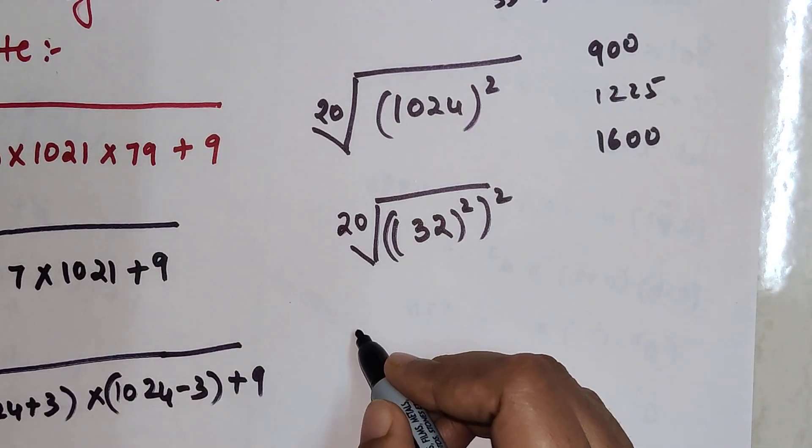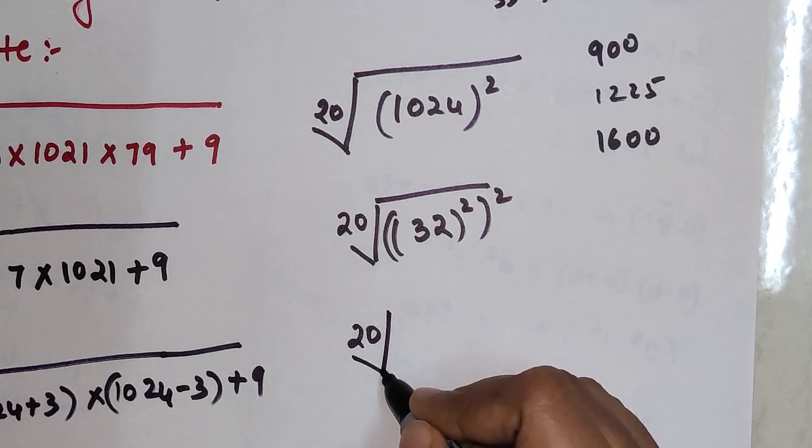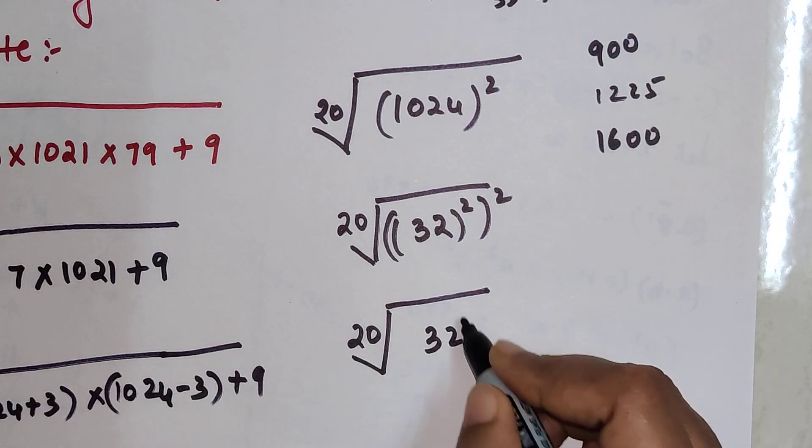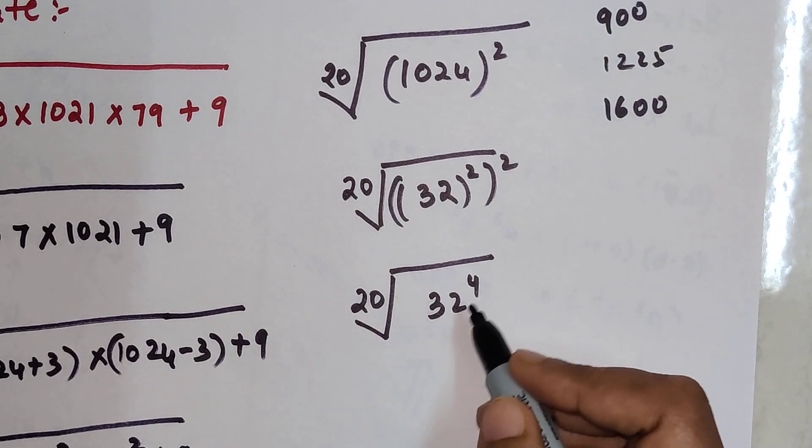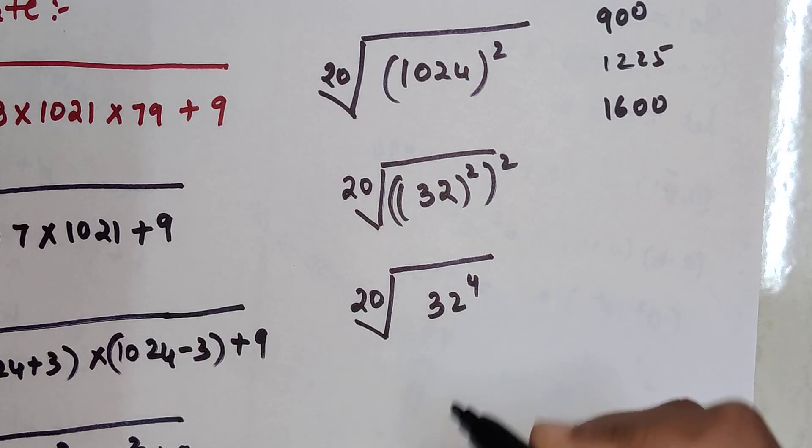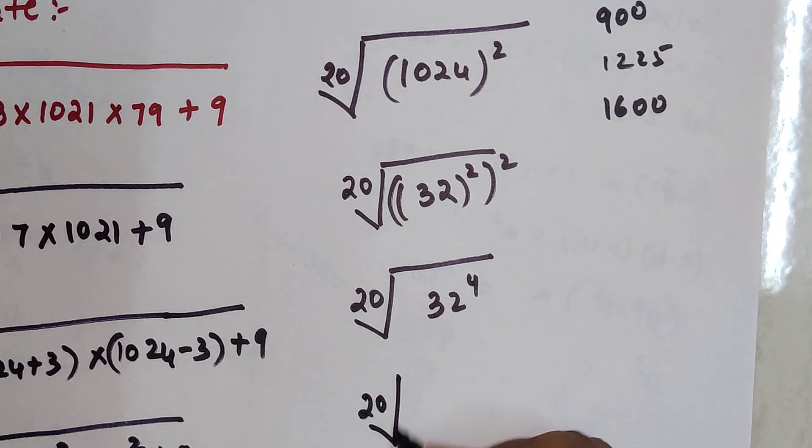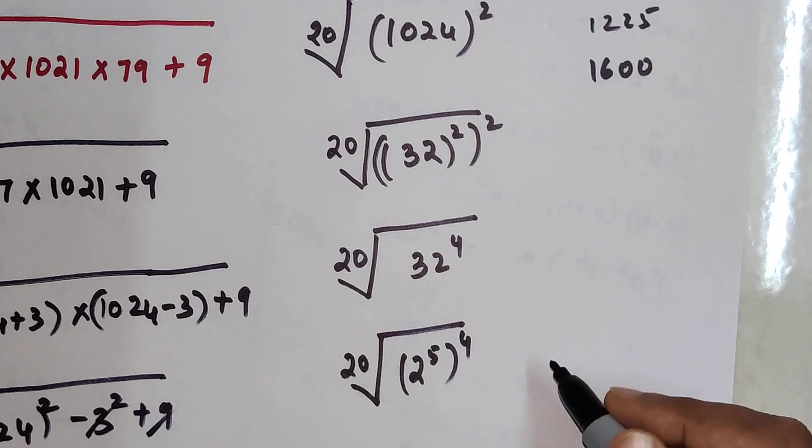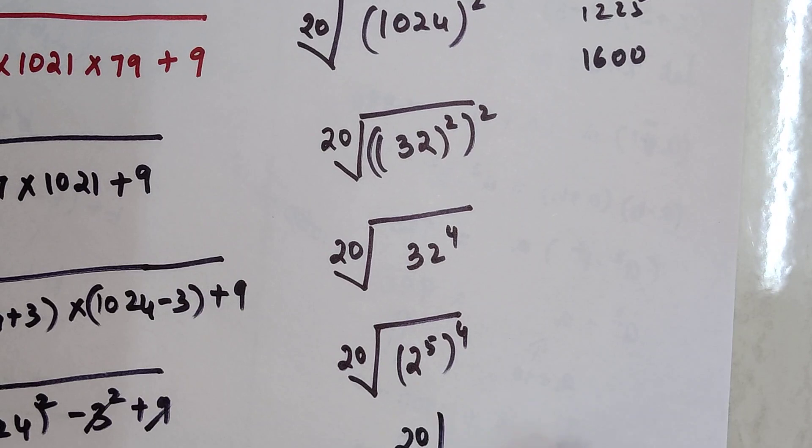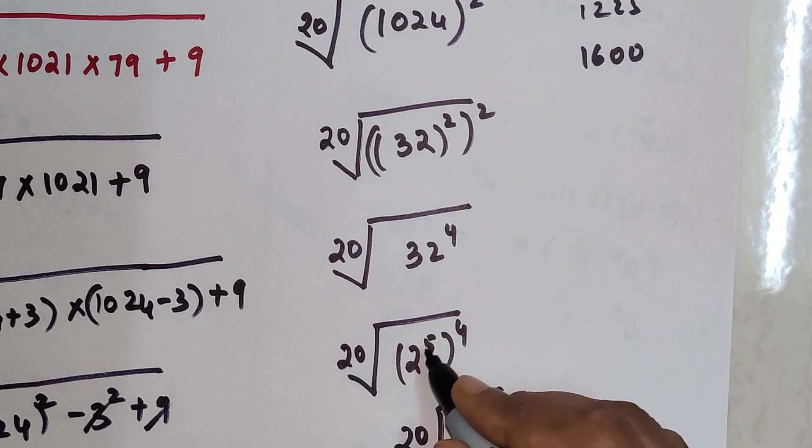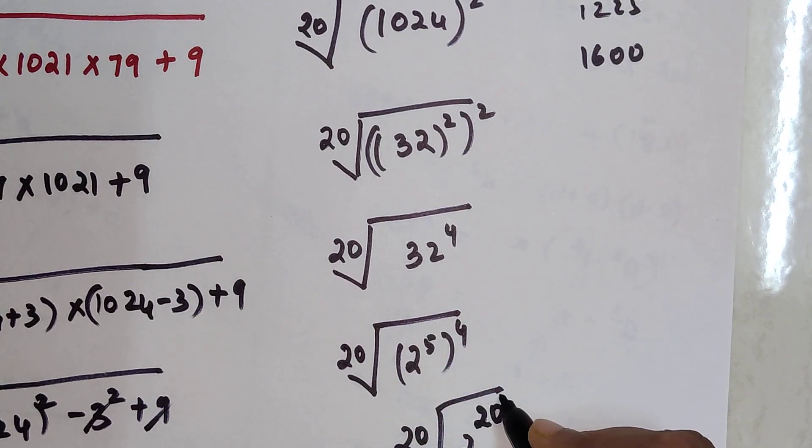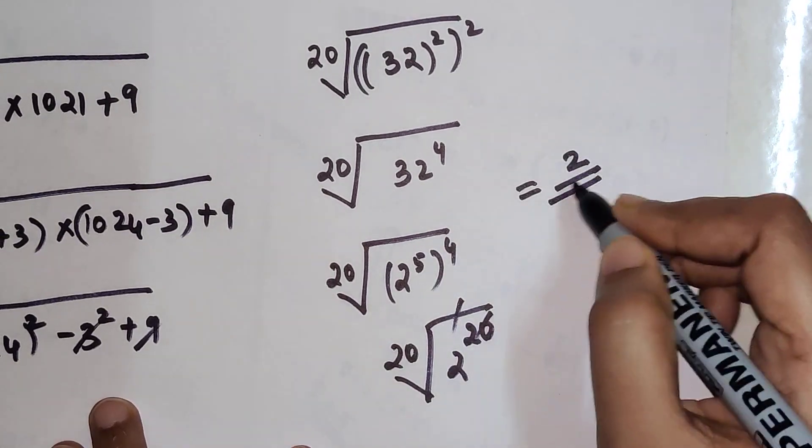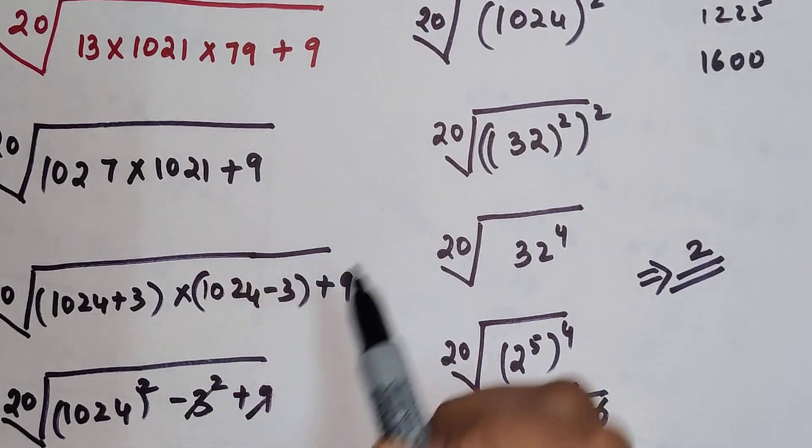Basically we are left with the 20th root of 32 raised to 4. Now 32 I know is 2 raised to 5. So this is the 20th root of (2⁵)⁴. This can be written as the 20th root of 2²⁰. So this 20 and this root will get cancelled. So final answer is nothing but 2 for this particular question.